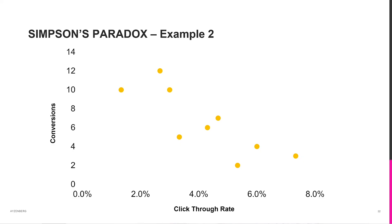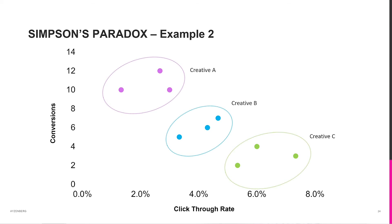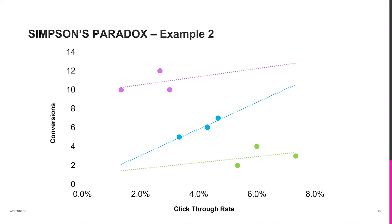Let's move on to a more advanced example. Say you're looking at the correlation between click-through rates and conversions, and you find a negative relationship — the higher the click-through rate, the worse your conversions. This is counter to what we'd expect. But it turns out there is a cluster of data demarked by three different creatives. When you break it down, the expected trend returns: higher click-through rates correspond to more conversions.